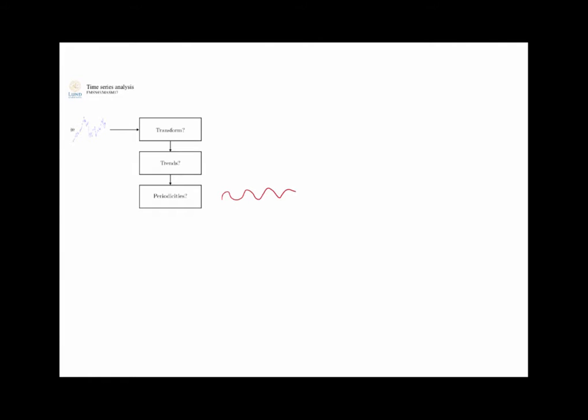The next thing is: is there periodicity in the data? After removing the trend, you may see a clear season—for instance a 12-month cycle or a 24-hour cycle—some kind of periodicity or structure you want to remove. We will take care of that also in chapter 4.3, looking for something that removes this periodic structure so that what remains appears basically as a stochastic process, a realization of a stochastic process. Then you're ready to move on.